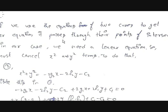We need to cancel the x² and y² terms. We can take the value of x² + y² from equation S2: x² + y² = −2G2·x − 2F2·y − C2. Now substitute this into equation S1. You get: (−2G2·x − 2F2·y − C2) + 2G1·x + 2F1·y + C1 = 0. Taking common factors, you get: 2x(G1 − G2) + 2y(F1 − F2) + (C1 − C2) = 0. This is how we prove the equation of the common chord.